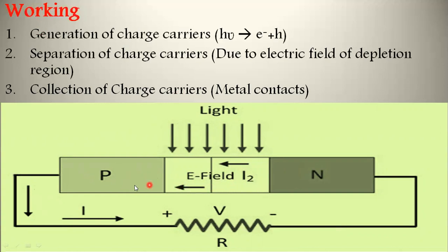Here the electric field direction is towards the P side, so holes also move towards the P side. On the other hand, electrons move in the opposite direction of the electric field. Because of that, the generated electrons move towards the N side and generated holes move towards the P side.